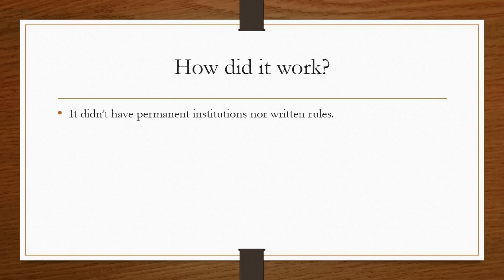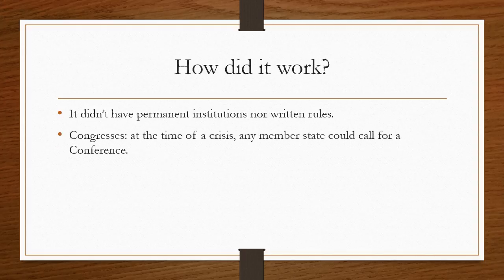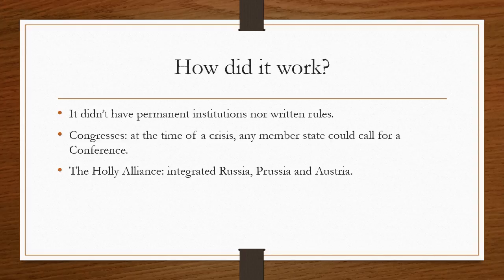How did it work? It didn't have permanent institutions or written rules. The Congresses could be called at the time of a crisis by any member state. They actually developed two types of alliances. One was the Holy Alliance, which integrated Russia, Prussia, and Austria. This alliance aimed to preserve the Catholic principles and the conservatism and tradition of Europe, and it was an idea of the Russian Tsar.